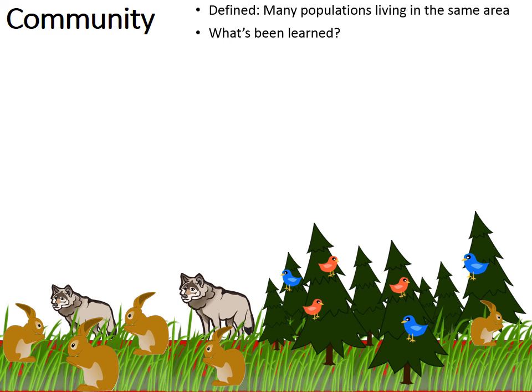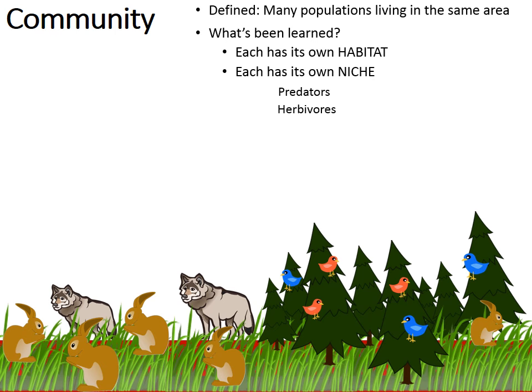By studying communities we've learned that each species has its own habitat — the birds are nesting in the trees, the rabbits are burrowing and building their homes in the ground. We've also learned that organisms have their own niche, which is the role or lifestyle that the organism occupies. For instance, wolves are predators — that's their niche. Rabbits are herbivores, others could be omnivores or decomposers.